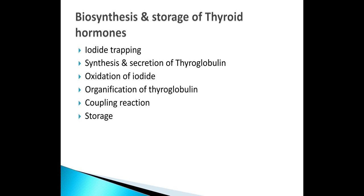When you take iodide in the diet, it enters the blood and is taken up by the thyroid gland by the process of iodide trapping. Iodine is converted to iodide and absorbed by the gastrointestinal tract. Iodide enters the blood and is taken up by the thyroid gland — this process is called iodide trapping.